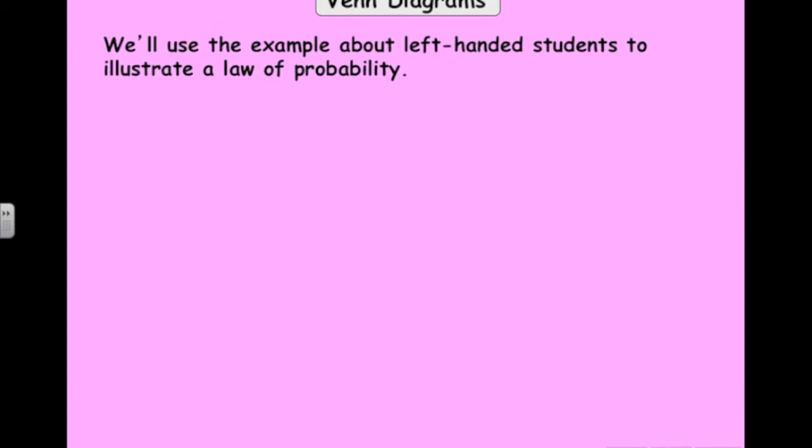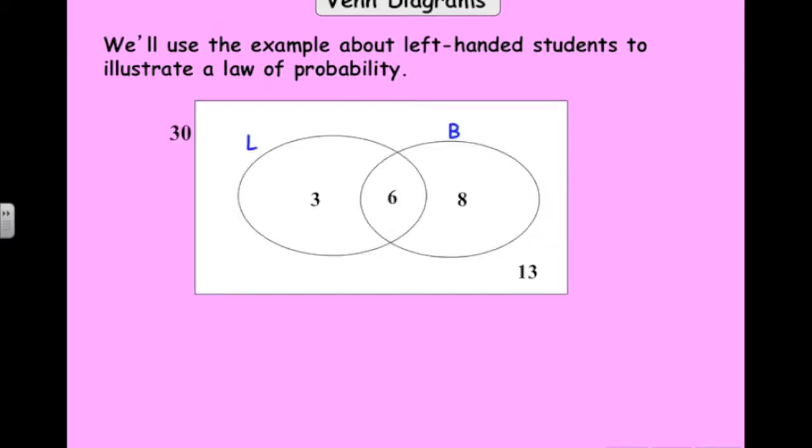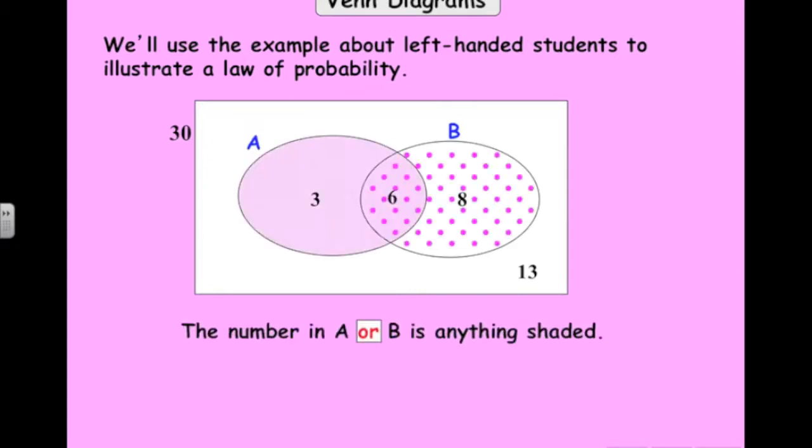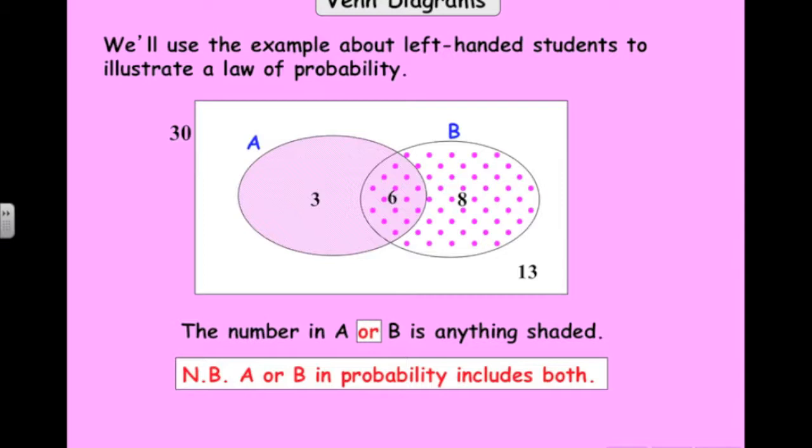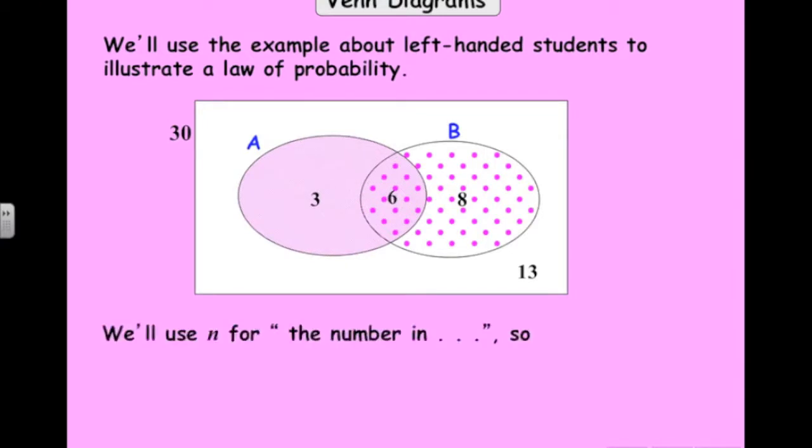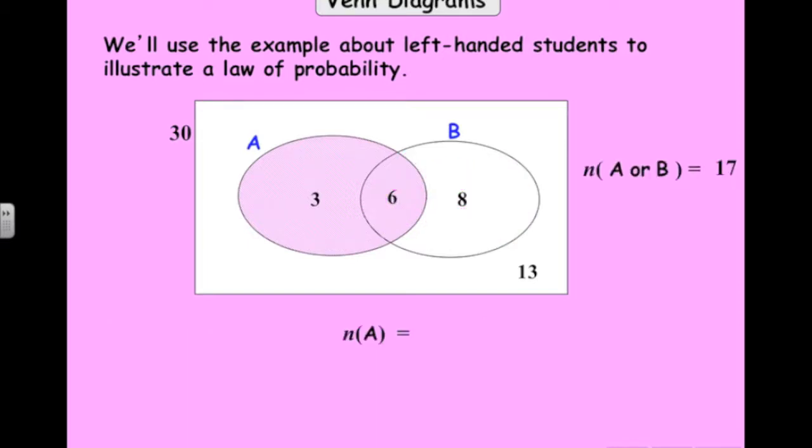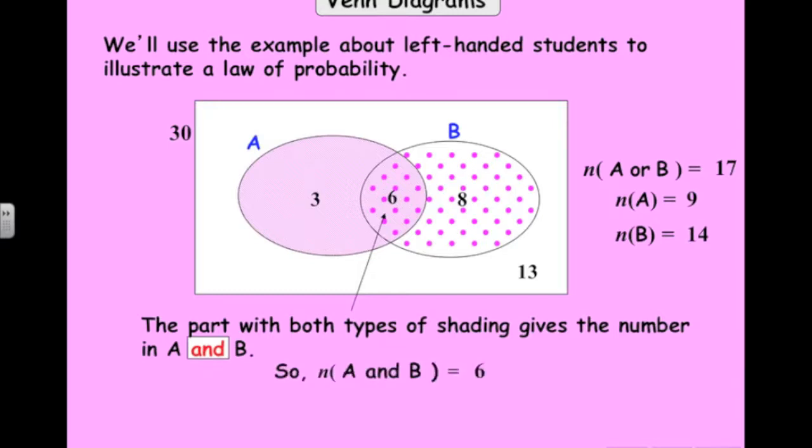I just want to use that example now to illustrate one of the laws that I showed you earlier for probability of A union B. If we look at that Venn diagram again, let's use A and B rather than L and B. The number in A or B is anything shaded there. So if we're talking about the union, A union B would be all that was shaded there. So 3 plus 6 plus 8. That was the answer to the last question. Now, if we use N(A or B) to indicate the number of elements, we've got 17 elements in A or B. The number of elements in A is 9. The number of elements in B, 6 plus 8, is 14. The number of elements in the intersection is 6.